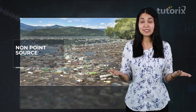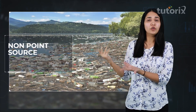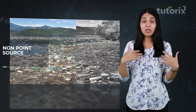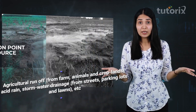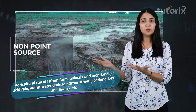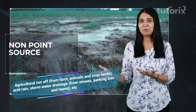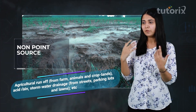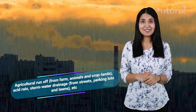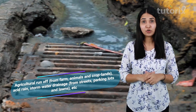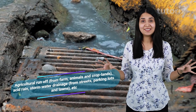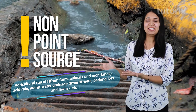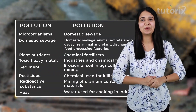When we are able to identify the source, it is called a point source. For example, if I say agricultural runoff — where the water and the pollutants are getting mixed — we cannot identify that. Similarly, if I say acid rain or stormwater drainage, all of these are examples of non-point sources, and there are many more as you can see in this table.